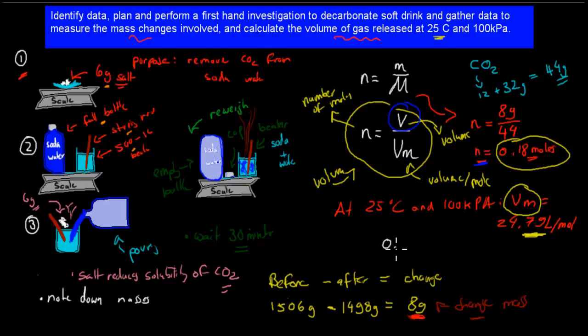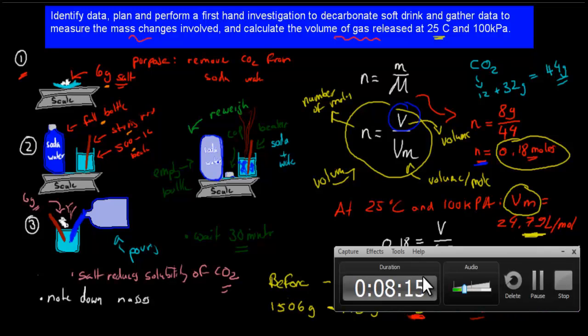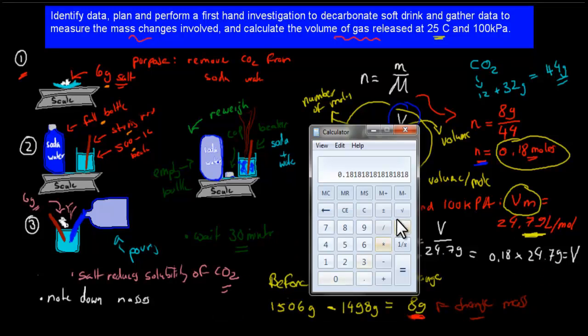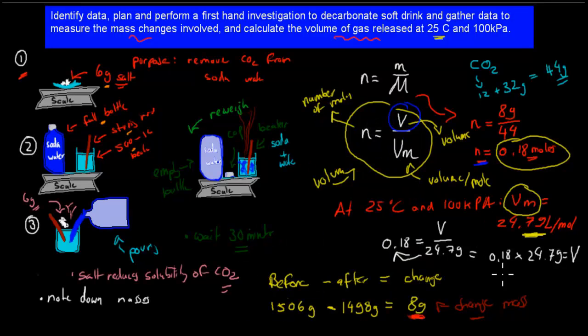So we have 0.18 equals V, that's what we're looking for, volume. And we know that one mole will take up 24.79 liters. And by rearranging it, so by bringing this over to the other side, what we'll have is 0.18 times 24.79 equals our volume. So we put that into our calculator. We will get the actual answer, which happens to be 4.46. So it's going to be 4.46 liters.